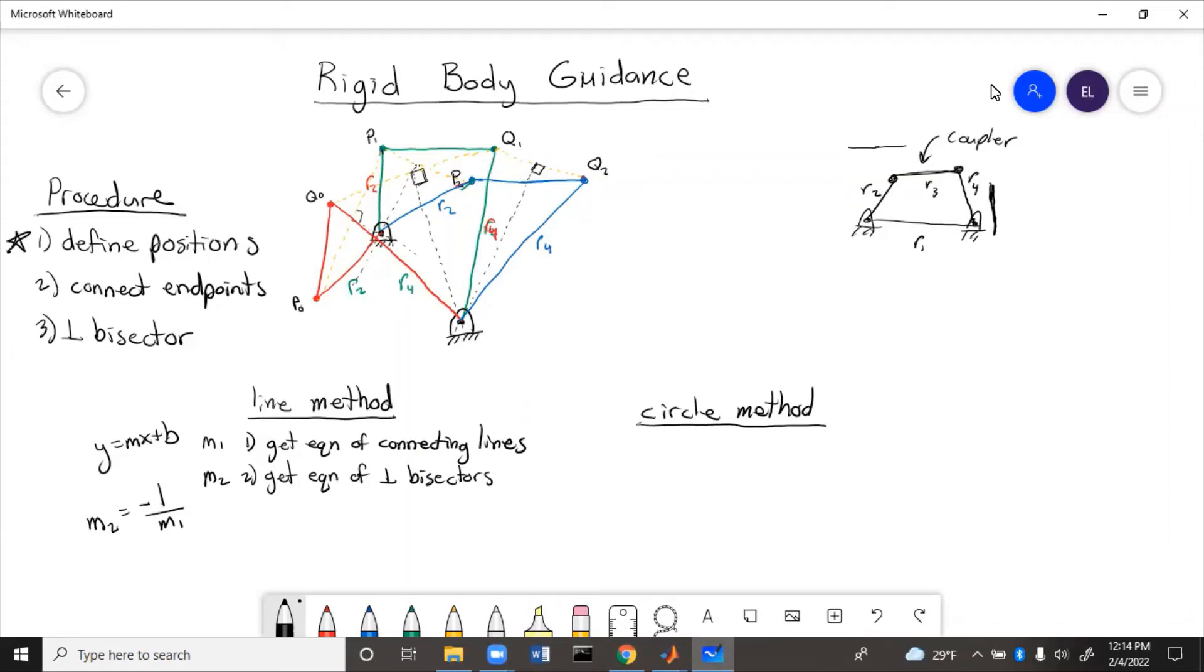So then once you get the equation of the bisectors, you find the intersections. So you'll have a y equals mx plus b equation for each of the bisectors. You just set those equations equal to each other and solve for the x and y coordinates of the intersection. And that x and y is going to be the coordinates of the ground points.